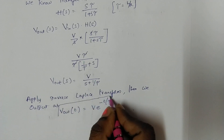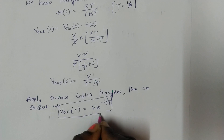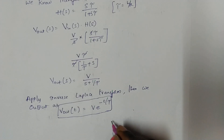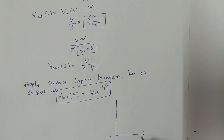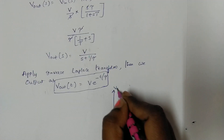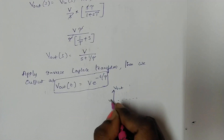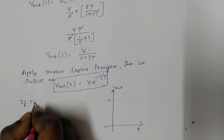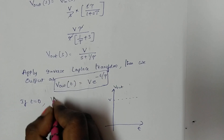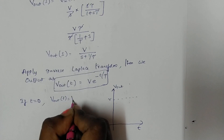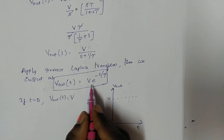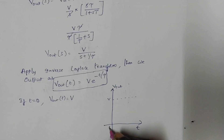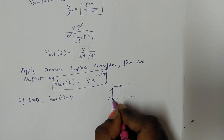Now we have to draw the output waveform. The x-axis is time and the y-axis is output voltage. The dotted lines represent the actual step input. To find the waveform, substitute t = 0: V_out = V · e^0 = V · 1 = V. So at t = 0, the amplitude is V volts.